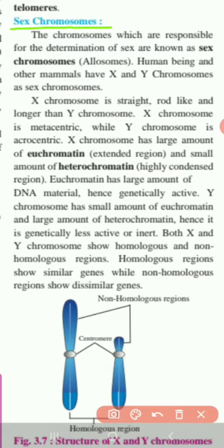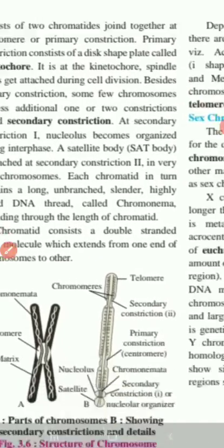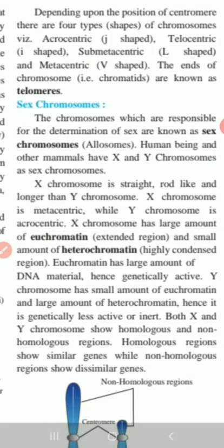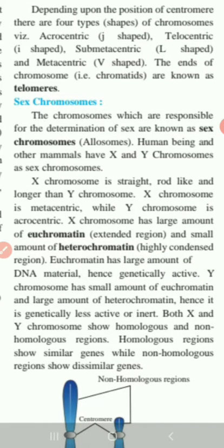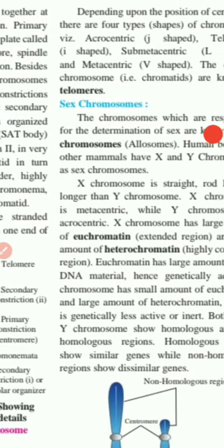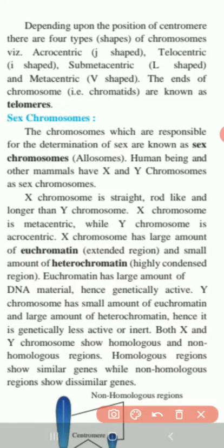Chromosome, as you know, is a hereditary unit. Depending upon the position of centromere, chromosomes are of four different types: metacentric, submetacentric, acrocentric and telocentric.